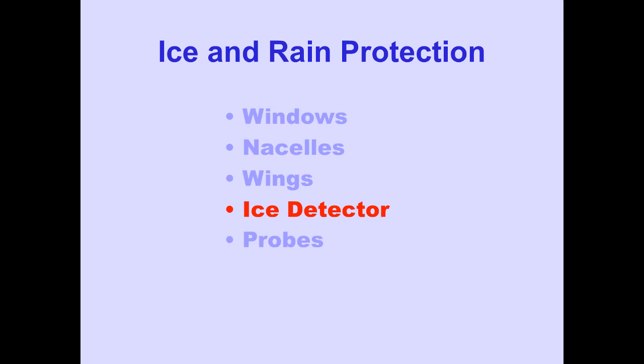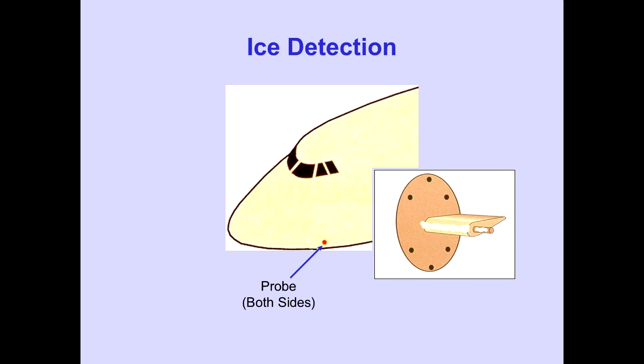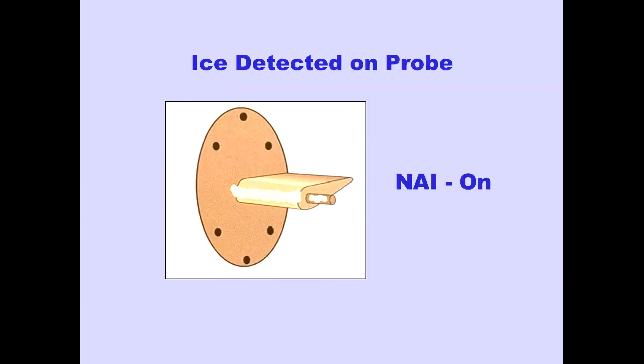Now let's look at the ice detectors. The ice detection system has two probes, one located on each side of the forward fuselage. They detect the presence of ice on their surfaces. When sufficient ice is detected, system logic activates nacelle anti-ice. When the system determines nacelle anti-ice is no longer necessary, it is deactivated.